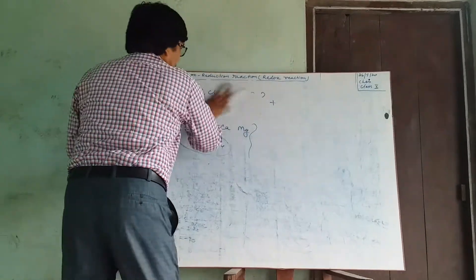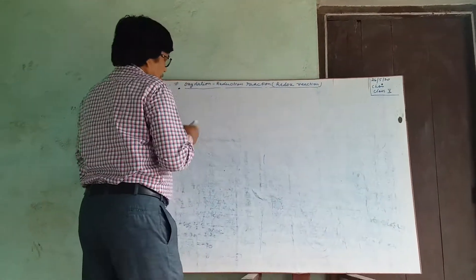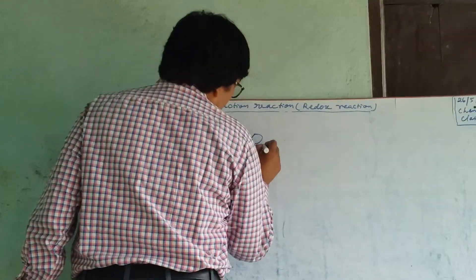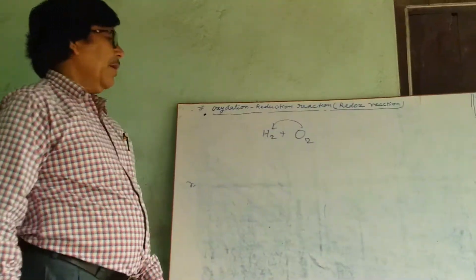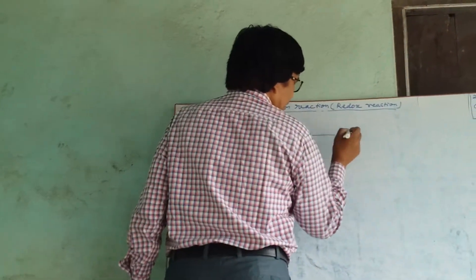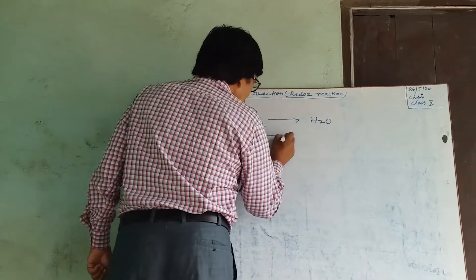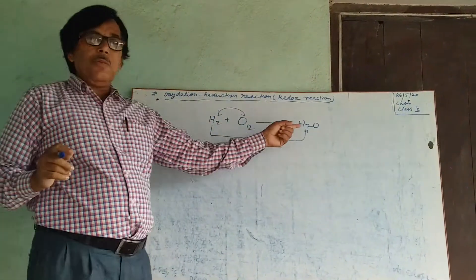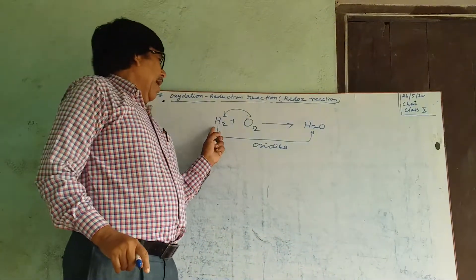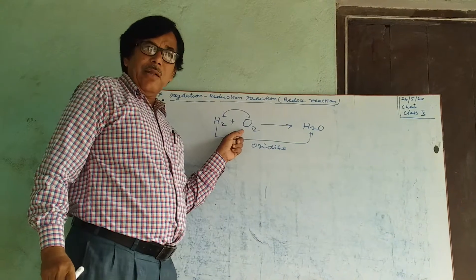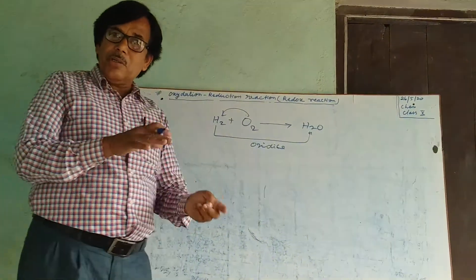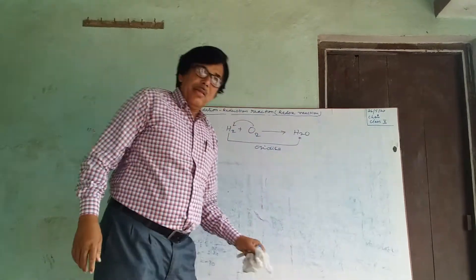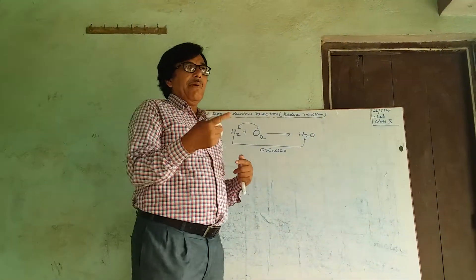Take an example. Suppose H2 (Hydrogen). If O2 is added to Hydrogen, it becomes H2O — meaning H2 is oxidized to H2O. At the same time, Hydrogen has been added to Oxygen, meaning O2 has been reduced to H2O. Thus Oxidation and Reduction take place together.